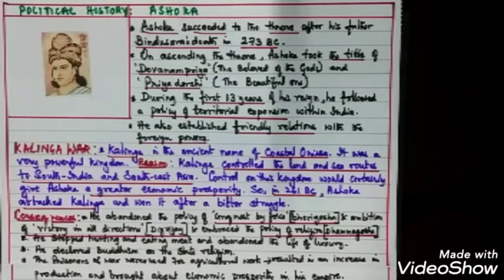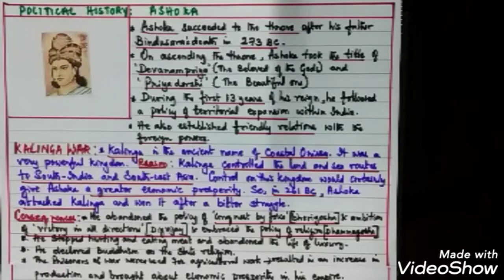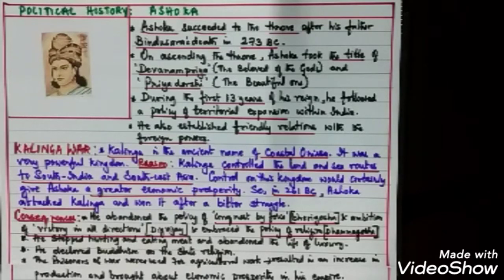The most important event in the life of Ashoka was the Kalinga War. Kalinga is located on the east coast of India — the present coastal Odisha — and was a small but very powerful kingdom. The reason Ashoka invaded Kalinga was that it controlled the land and sea routes to South India as well as Southeast Asia. Control over this kingdom would give Ashoka greater economic prosperity. In 261 BC, Ashoka attacked Kalinga.